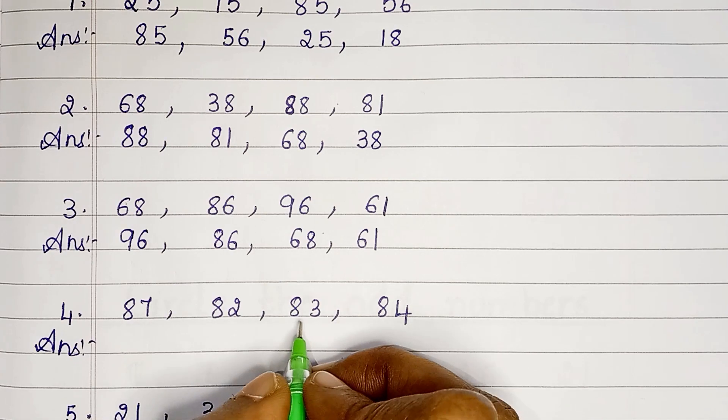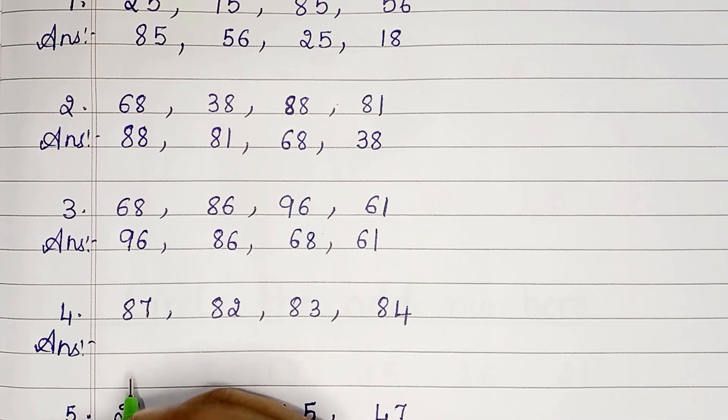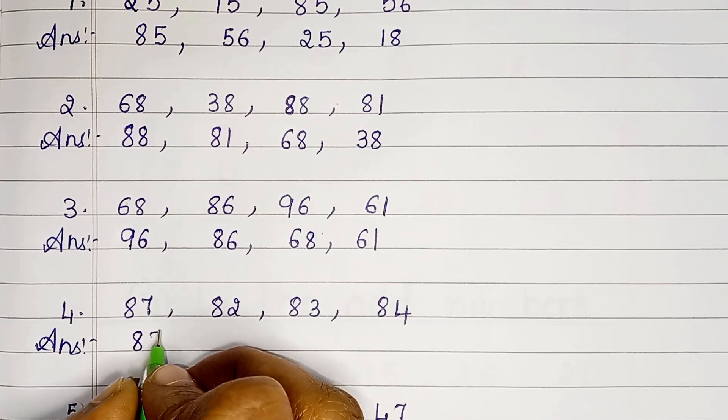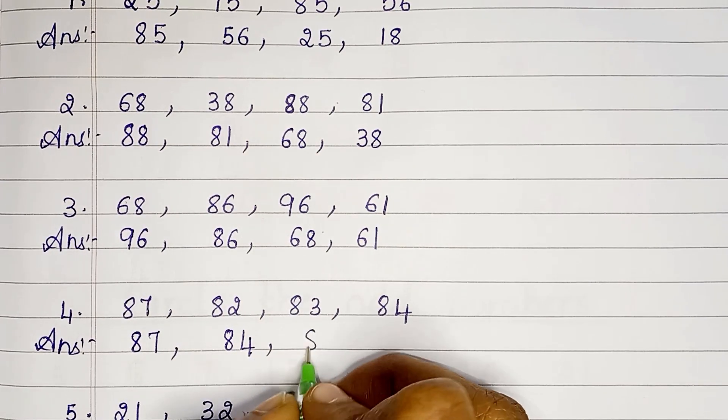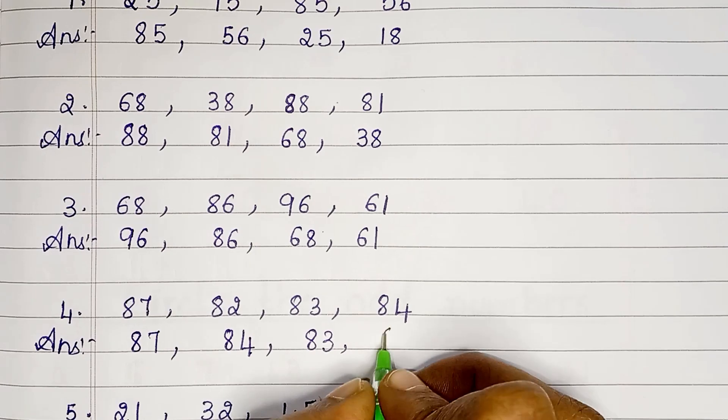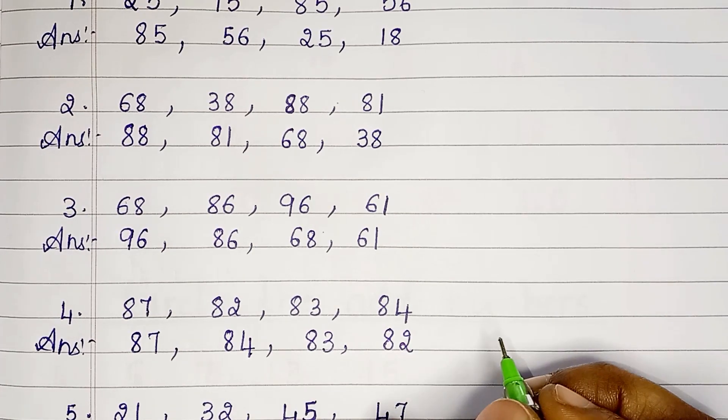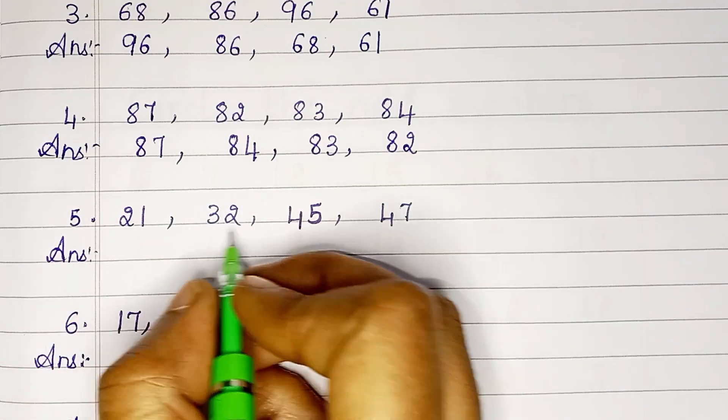The next set of numbers: 87, 82, 83, 84. In descending order: 87, 84, 83, 82.